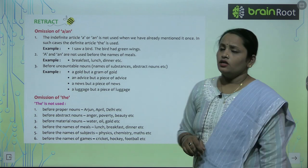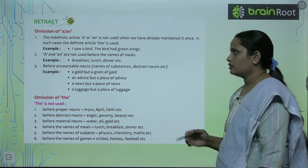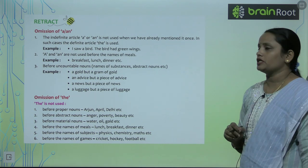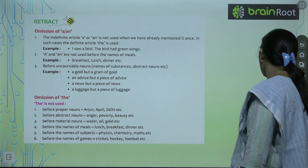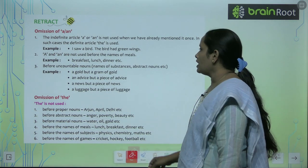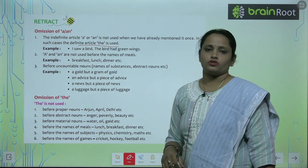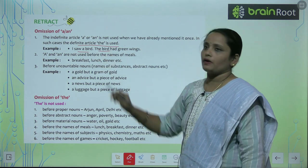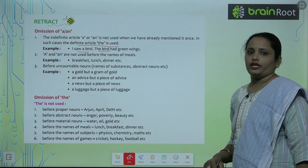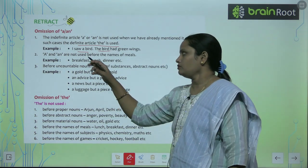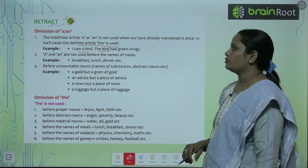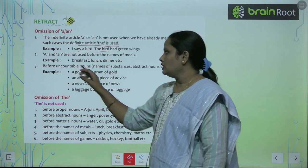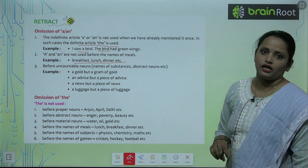Omission of A and An. There are places where we do not write A or An. First: the definite article A or An is not used when we have already mentioned it once. In such cases, the definite article 'the' is used instead. For example: 'I saw a bird.' When we refer to that same bird again: 'The bird has green wings.' Also, A and An are not used before the names of meals — breakfast, lunch, dinner.